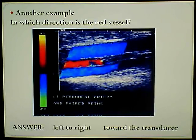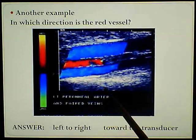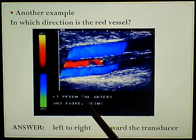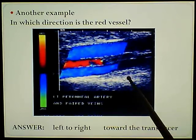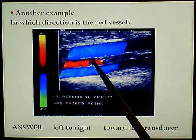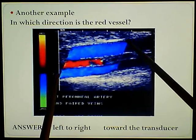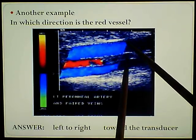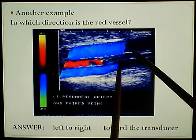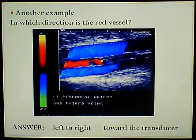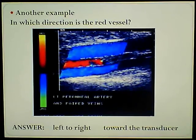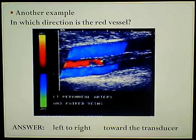Another example - in which direction is the red vessel? We see our box. Again, is this my home? No, because that downward line is going through the color. Is this my home? Yes. So I put my finger here on the red vessel. Red is towards, so I slide the blood towards the transducer, towards my home line. It is going from left to right towards the transducer. This is exactly the way the registry will ask, and this is exactly the way I will ask.